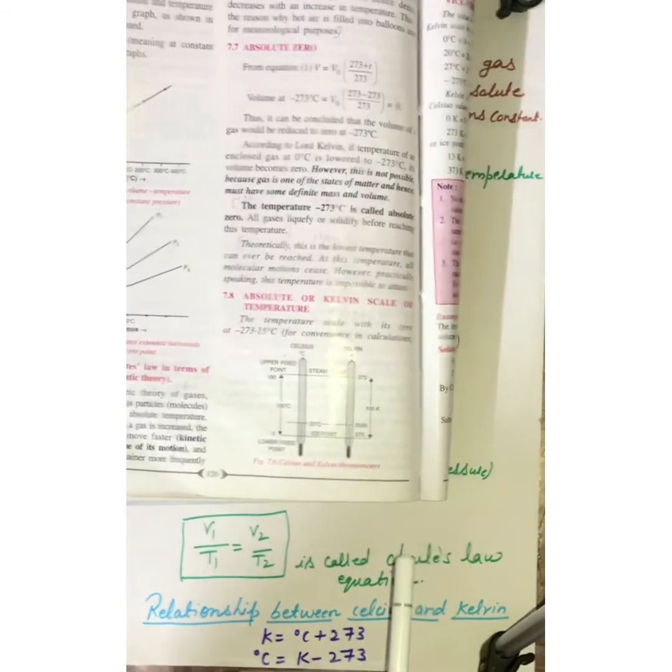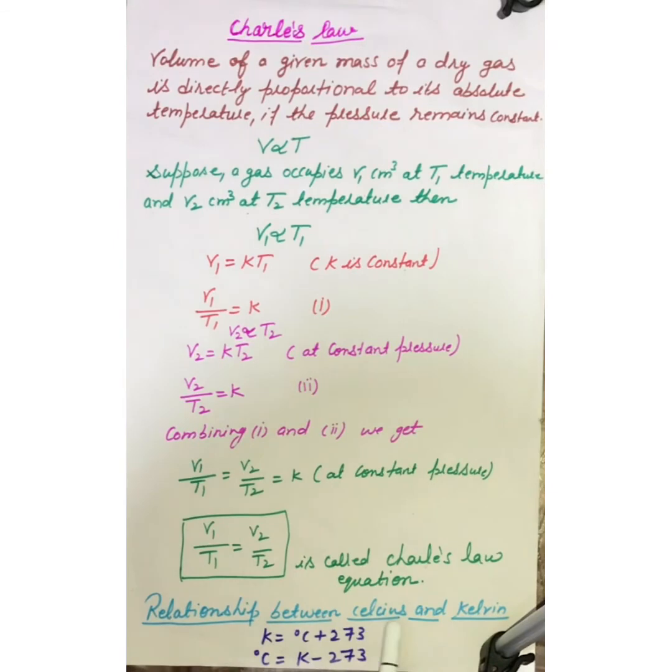So this is the relationship between Celsius and Kelvin temperature. See, for this also, you are having equation relationship between Celsius and Kelvin temperature. What is the relationship? It is Kelvin equals to Celsius plus 273. Means, if you have to convert Celsius into Kelvin, then you have to use this formula. It will be Kelvin equals to Celsius plus 273.